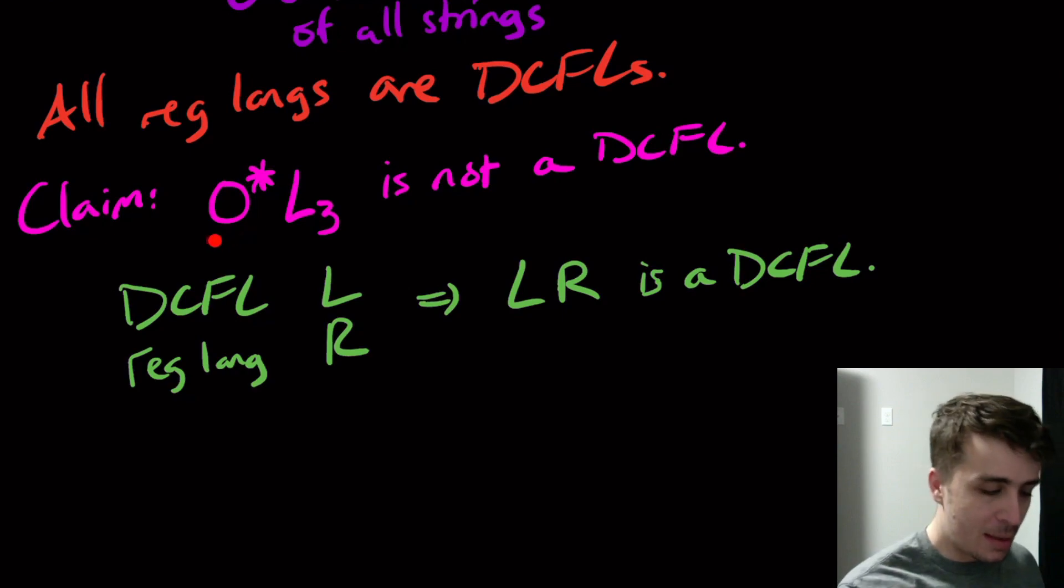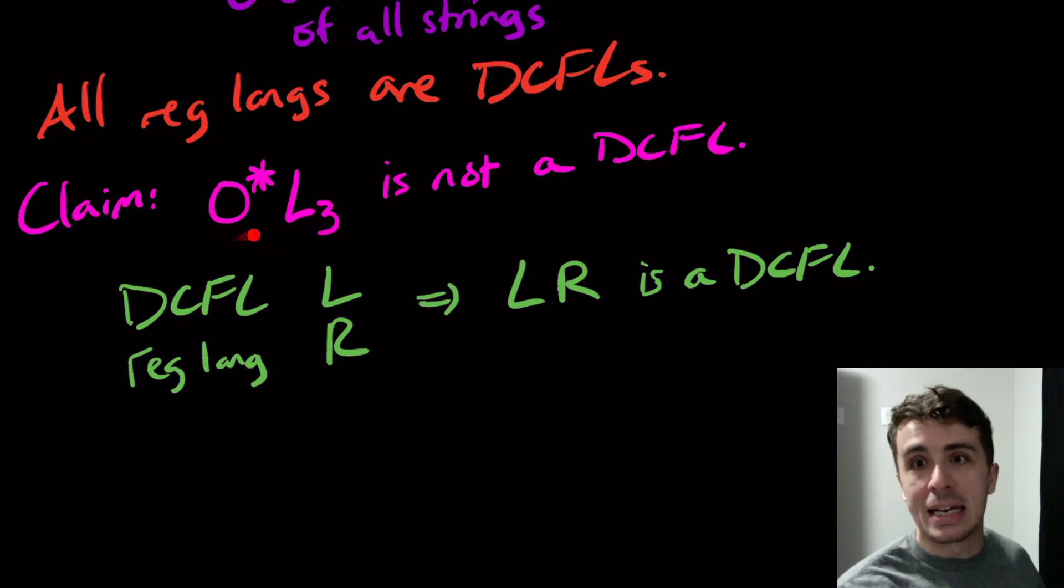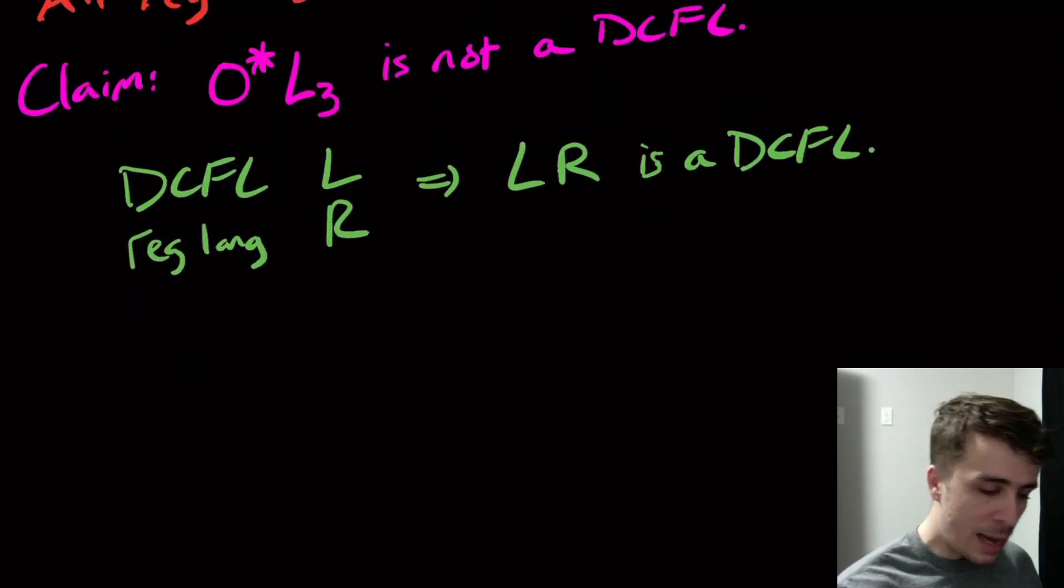But since this language right here is a regular language, it automatically is a DCFL. So therefore, this is a concatenation of two things that are DCFLs that I claim is not a DCFL. So how do we actually prove this?